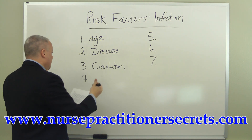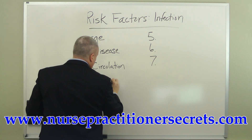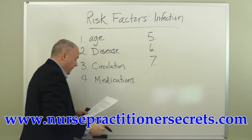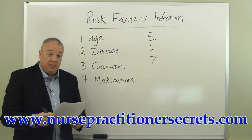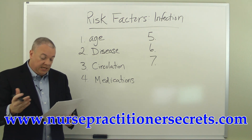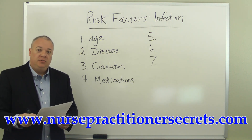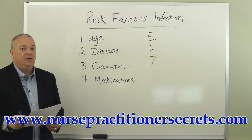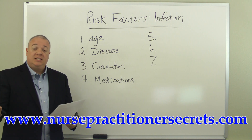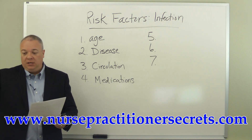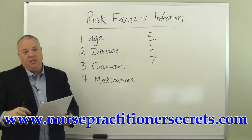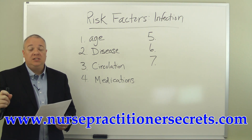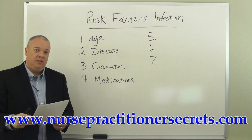Fourth, we want to talk about medications. Certain medications — immunosuppressants and chemotherapy — obviously reduce immunity, and improper use of antibiotics can build up resistances. So either the medication itself increases the chance of infection, or the abuse or misuse of antibiotics has increased resistance and therefore raises the risk of infection.